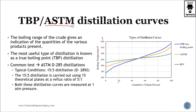ASTM stands for the American Society for Testing Materials — they are the ones that state the standards, but there are several ways to carry these out. TBP in my opinion is more complete because it uses more stages, so technically it is better. ASTM is a quick way to characterize, but the more precise method is TBP.